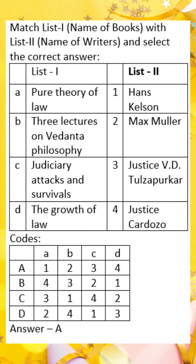Legal norms are hierarchically arranged. Kelsen argued that legal norms are arranged in a hierarchy, with higher norms authorizing lower norms. The highest norm in the hierarchy is the grand norm, or basic norm. The grand norm is a hypothetical norm that is not itself authorized by any other norm.